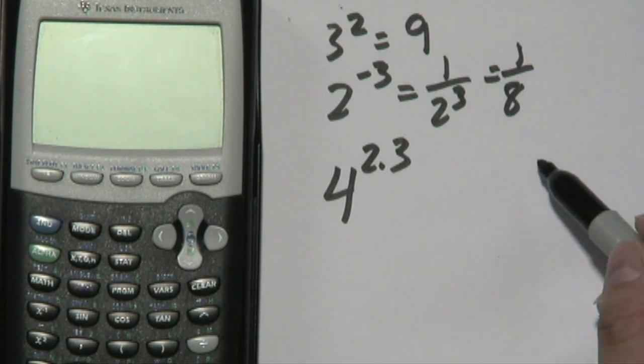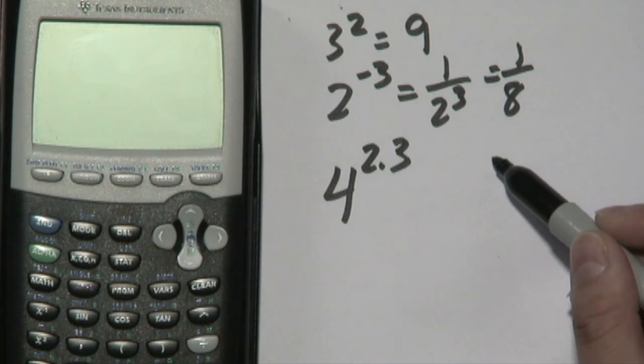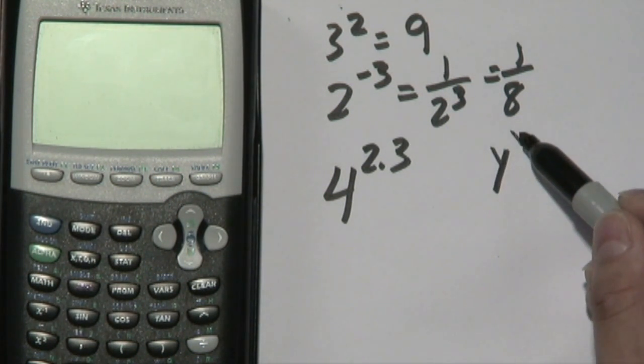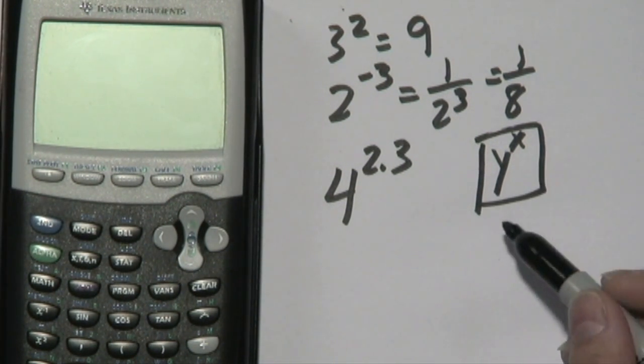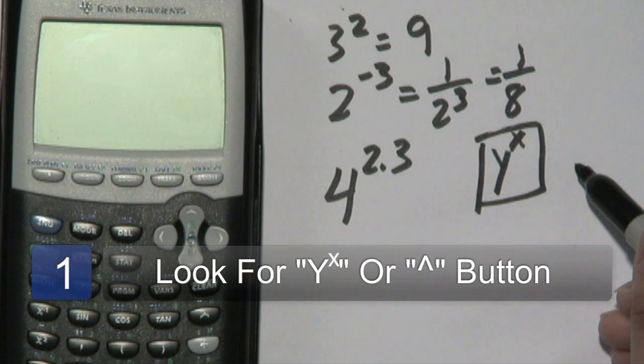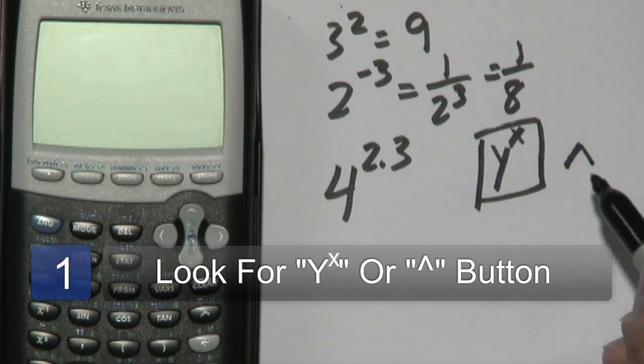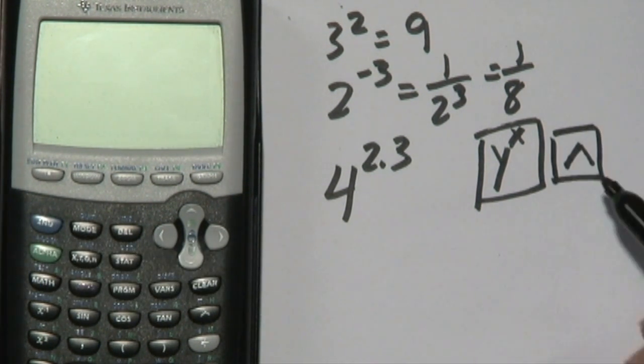Now, one thing that you want to think about is on any calculator that you have, you want to look for either the y to the x button, which is in most scientific calculators, or the caret button, which looks like this. That's what you want to shoot for.